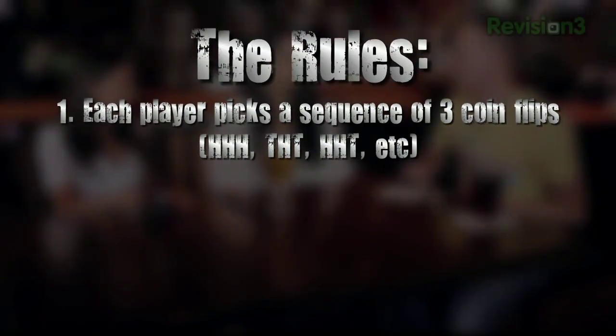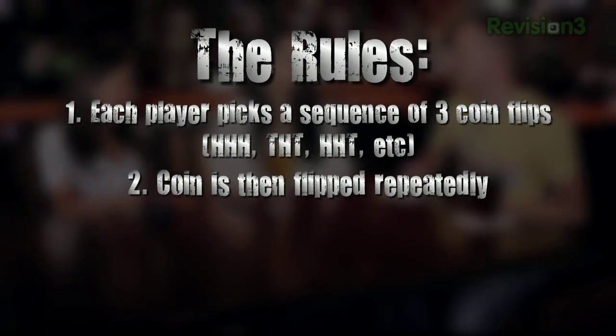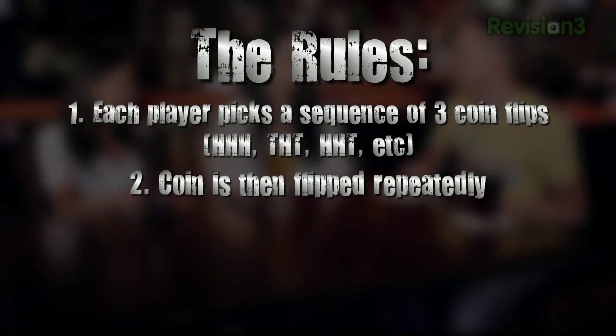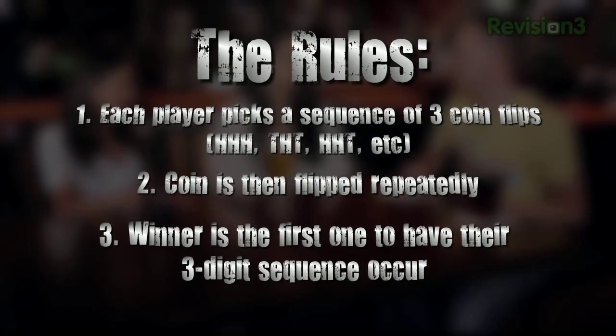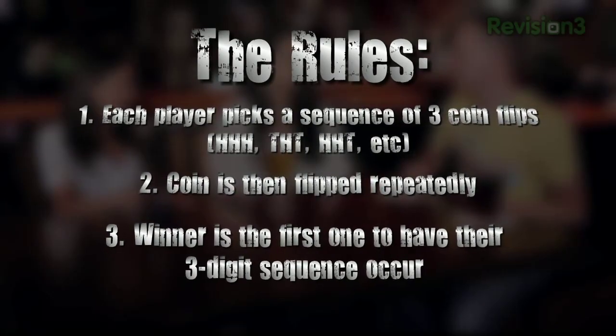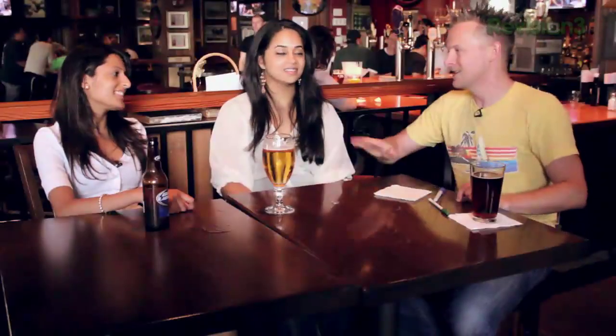You pick a three-digit sequence — heads, heads, heads, heads, tails, heads, tails, tails, tails, heads — and that'll be your horse. Then I'll pick mine and we'll see whose sequence comes up first. Make sense?